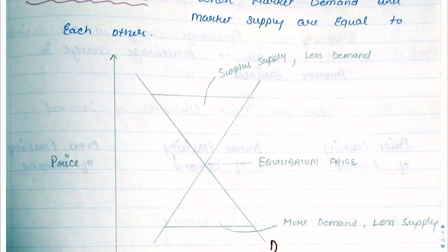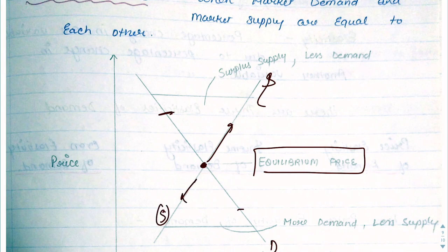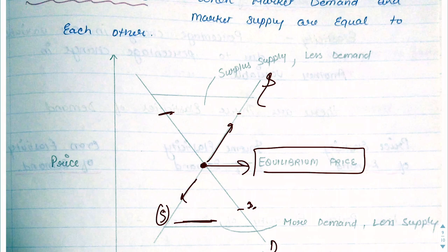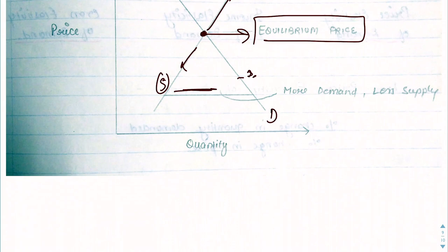We have seen the demand curve downward sloping and the supply curve upward sloping. When both demand and supply meet at one point, that is the equilibrium price. At that point, the quantity the consumer is demanding equals the quantity the supplier is ready to produce and supply. If above equilibrium, supply is high but demand is low. If below equilibrium, the price is too low — demand is high but suppliers won't supply. When market demand and market supply are equal, it is known as the equilibrium price.